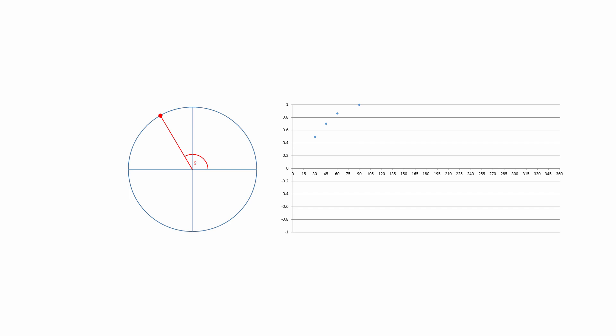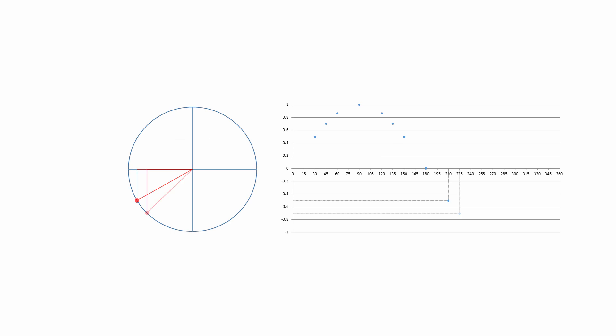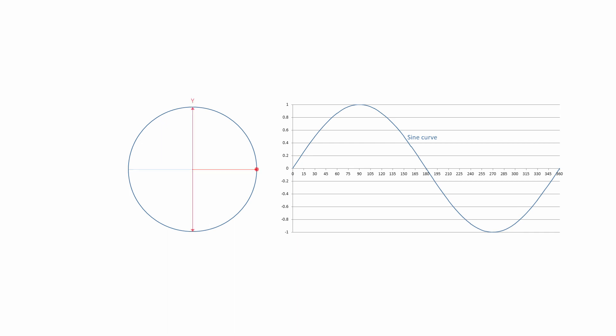As the dot continues to move around the circle, the angle it moves through continues to grow. It's actually this angle we're using to construct the graph. But although the dot has moved 120 degrees from its original position, we have a new right-angle triangle with an acute angle of 60 degrees. So we can apply the same reasoning as before to calculate another point for the graph. As the dot continues on its journey around the full 360 degrees of the circle, more points can be added to the graph, and a very distinctive curve begins to emerge.